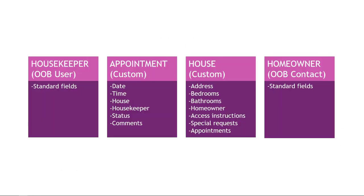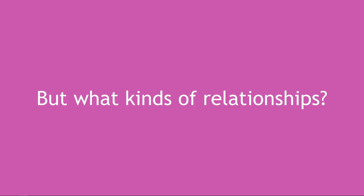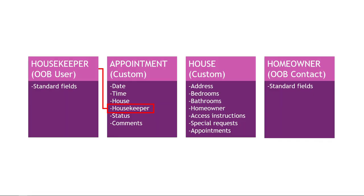So back to the data model we're building. Hopefully you can see that we need a relationship between housekeeper and the appointment — when we create a new appointment, we have to say which housekeeper should be doing the cleaning. We also need to know which house to clean, so we have a relationship between the appointment and the house. And then the house has a homeowner, so we have that relationship there as well. But what kinds of relationships — one to N, N to one, N to N? Let's start with the housekeeper and use the UI trick.